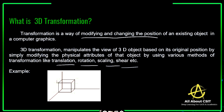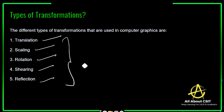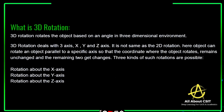3D transformation manipulates the view of a 3D object — remember that point. In the example you can see a 3D cube present on the 3D plane. The different types of transformations in computer graphics are: translation, scaling, rotation, shearing, and reflection. These are all the different techniques that can modify the object's size or shape.